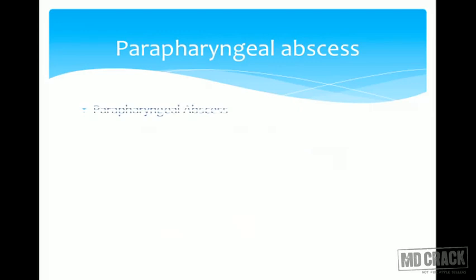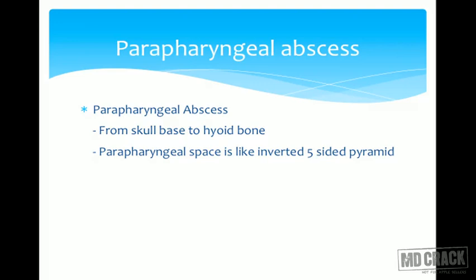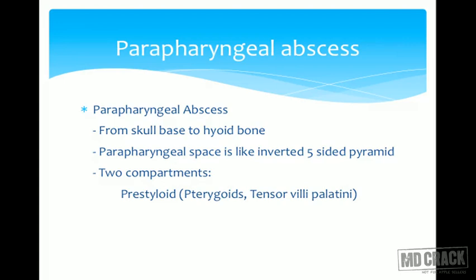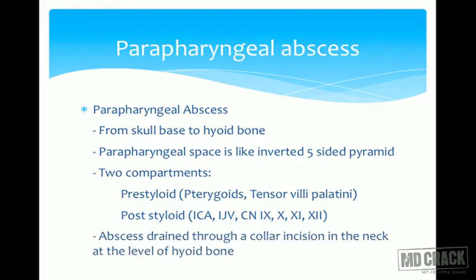The parapharyngeal space extends from the skull base to the hyoid bone and is shaped like an inverted five-sided pyramid. It has two compartments: the pre-styloid, containing muscles like pterygoids and tensor veli palatini, and the post-styloid, containing the neurovascular bundle — internal carotid artery, internal jugular vein, and cranial nerves 9th, 10th, and 11th. Abscess is drained via a collar incision at the level of the hyoid bone.